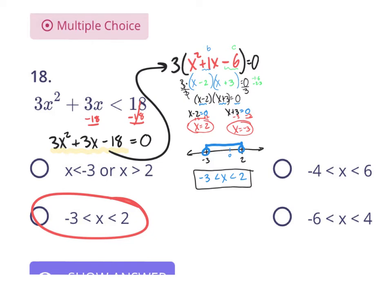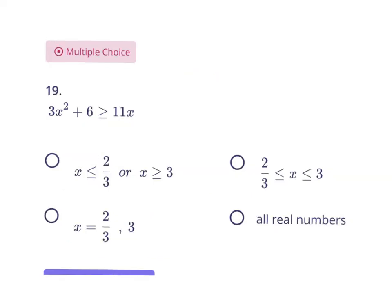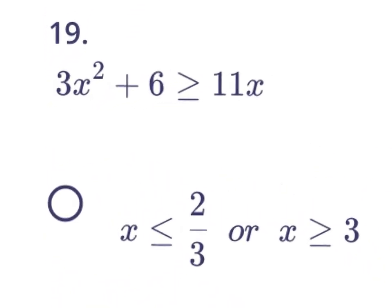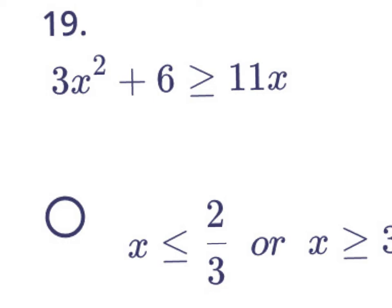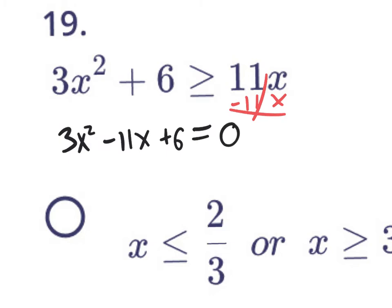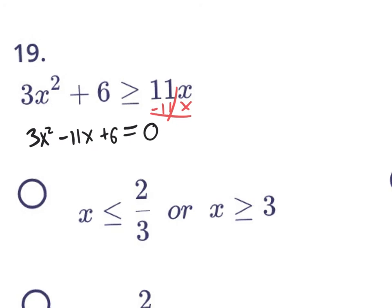Let's try one more quadratic inequality. Same deal — pretend it's an equation. Let's move everything to one side: subtract 11x, and we have 3x squared minus 11x plus 6 equals 0. Because our A value is 3, it might be factorable using the A-times-C method — getting negative 9 and negative 2 — but instead, I know a lot of us would rather use the quadratic formula.